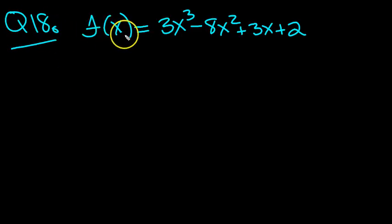Right, let's have a look at this one then. f of x is a cubic, it's 3x cubed minus 8x squared plus 3x plus 2.